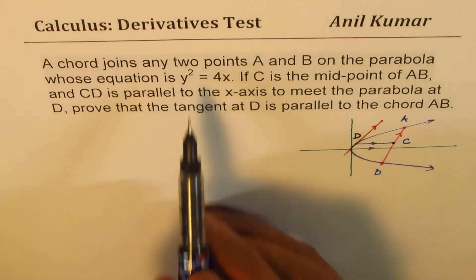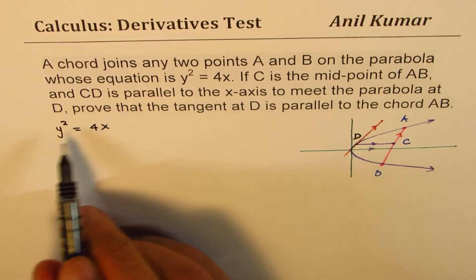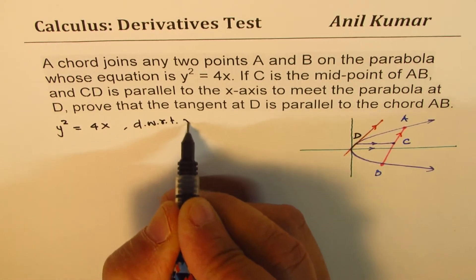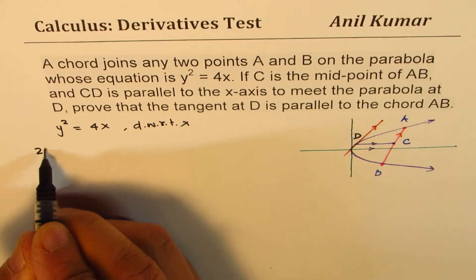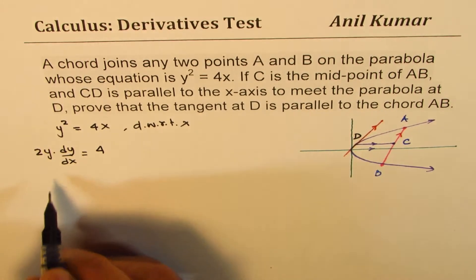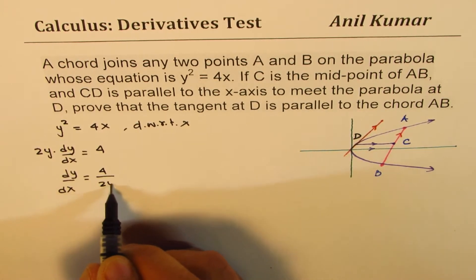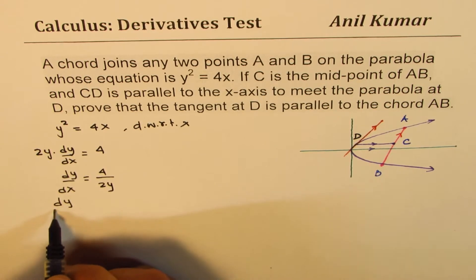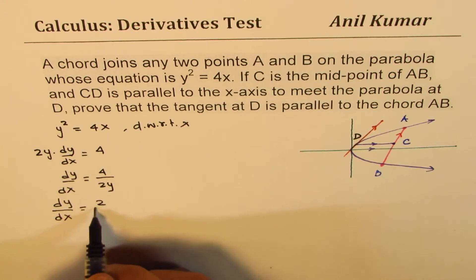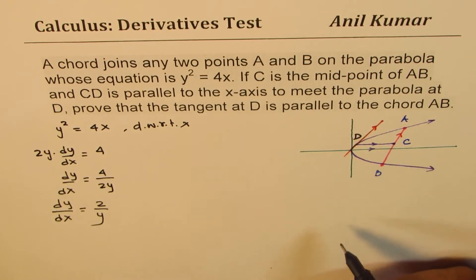Let's begin by the given equation, which is y² = 4x. We can take implicit derivatives. Differentiating with respect to x on both sides, we get 2y dy/dx = 4. So dy/dx = 4/(2y) = 2/y. This becomes the derivative at any point.